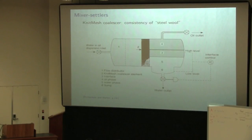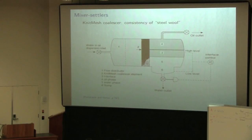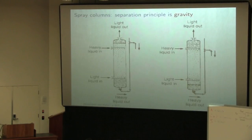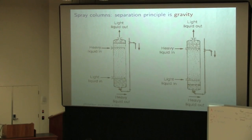Any questions on the mixer-settler type concept? So it's pure mixing, followed by the separation step, and then the draw-off. Some other ways of doing this contacting and separation in a single integrated unit are by columns.